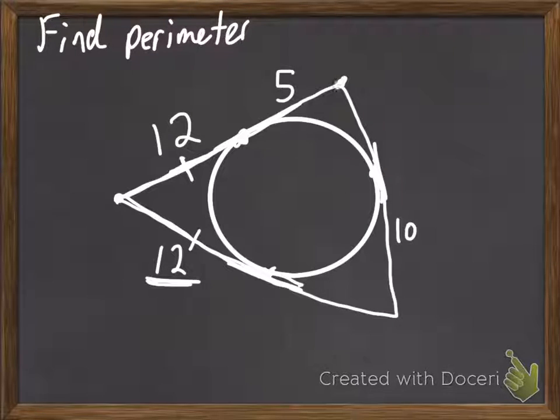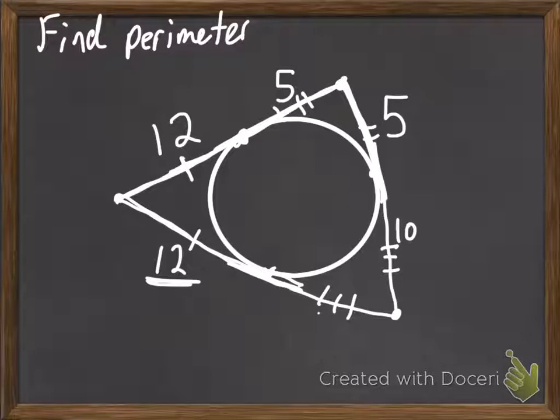We see this point here goes there to there. That means that these two are congruent. So, if this is 5, then this is also 5. And likewise follows here. So, these are congruent. So, 10 and 10.